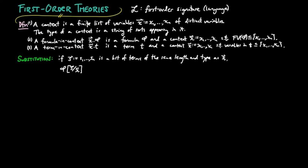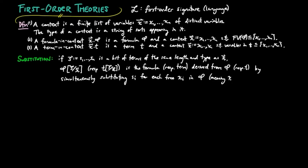We write phi bracket s over x, respectively t bracket s over x, for the formula, respectively term, obtained by simultaneously substituting si for each free xi in phi, respectively t.